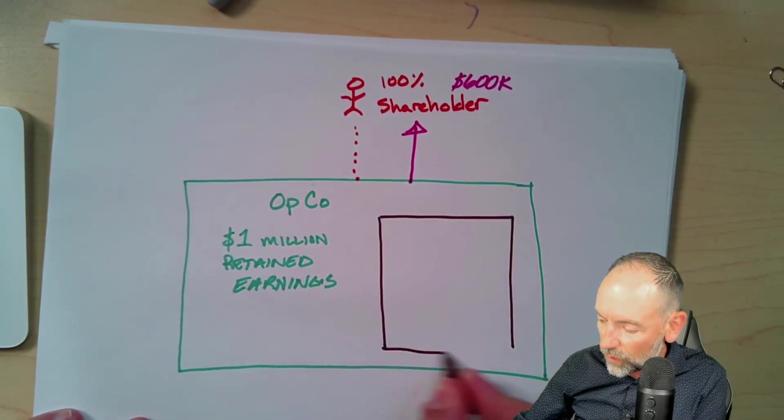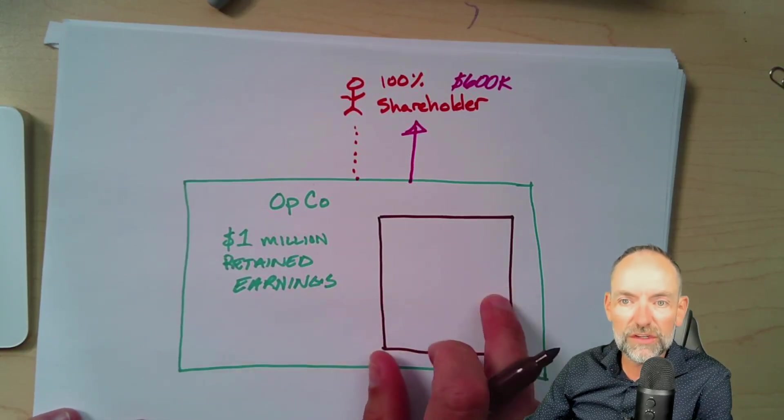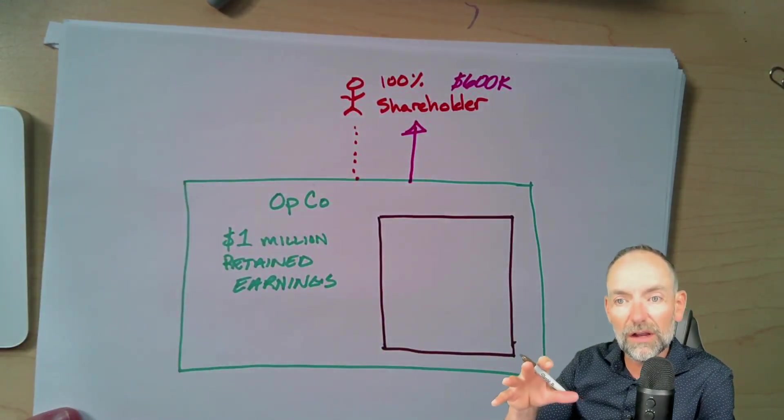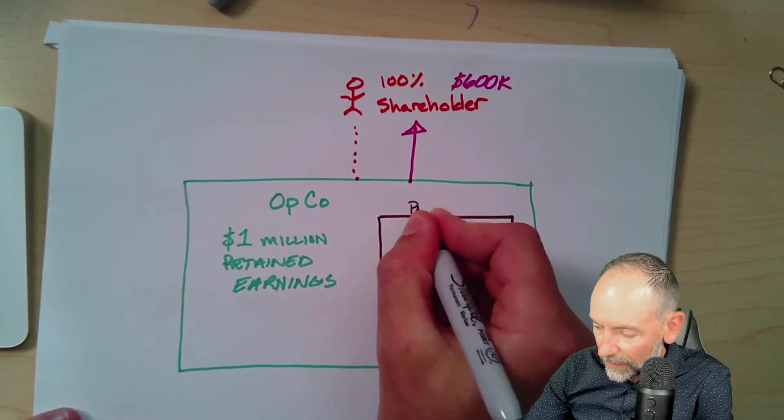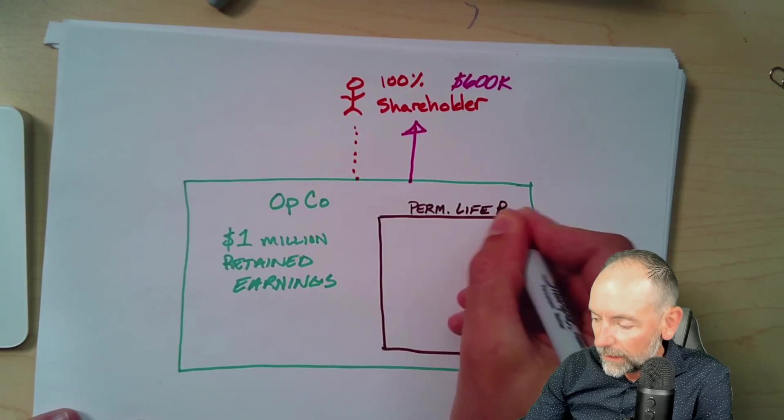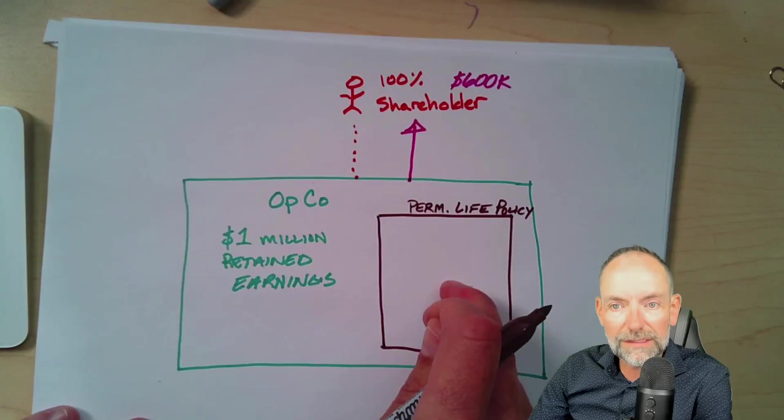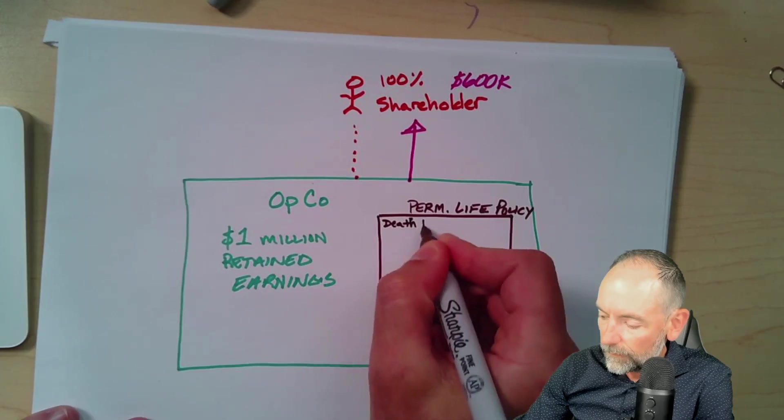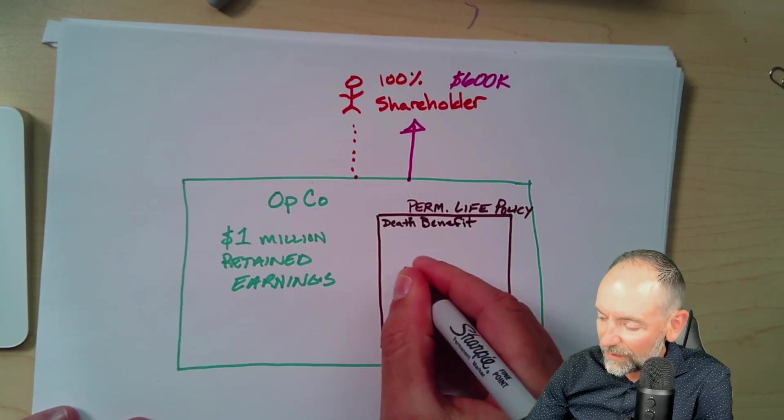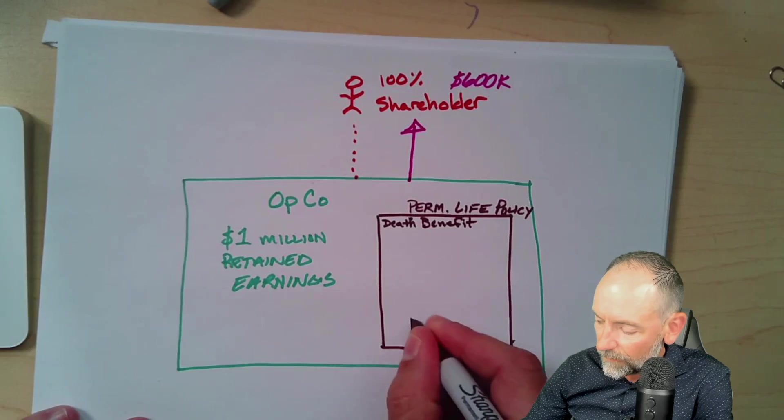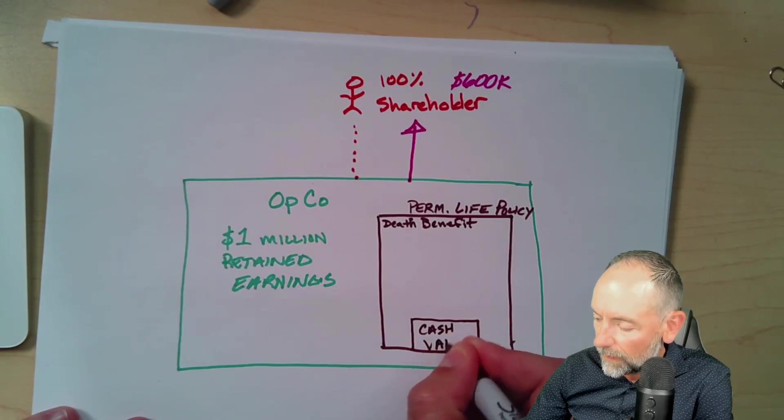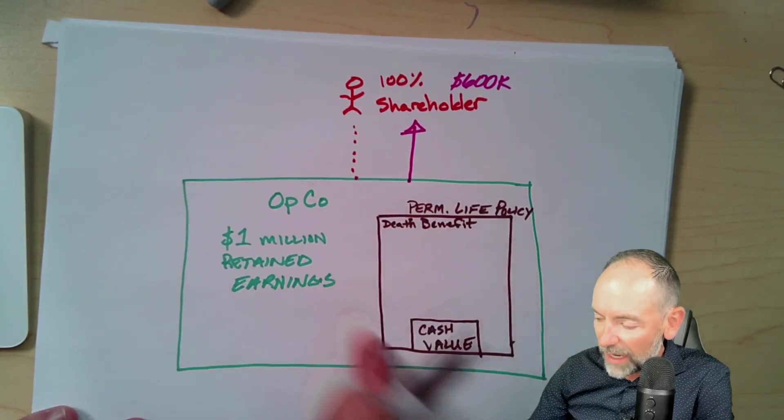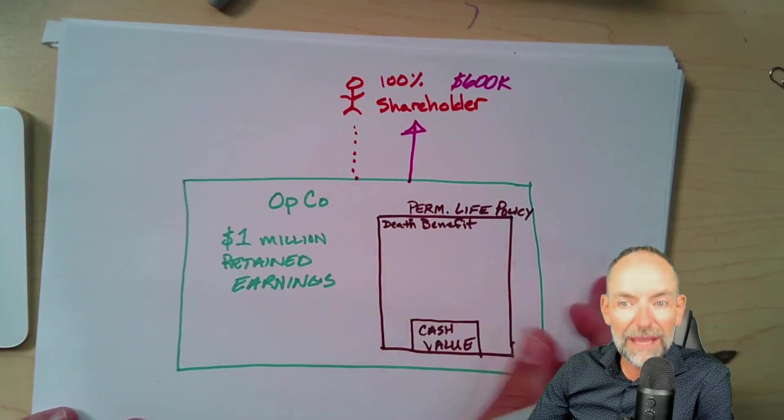Inside the corporation, we can use corporate tax dollars to purchase the same life insurance that we could buy personally. Now, we're not talking about the actual term life insurance that you're renting. We're actually talking about permanent life insurance. So I could buy a permanent life policy. And the corporation's going to own this policy. And with it, it's going to have a death benefit. So there's this big death benefit. And there's also something else. There's this cash value.